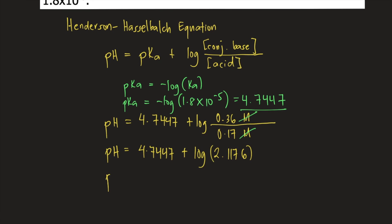So pH is equal to 4.7447 plus the log of 2.1176, which is 0.3258. So 4.7447 plus 0.3258, that is equal to 5.0705.